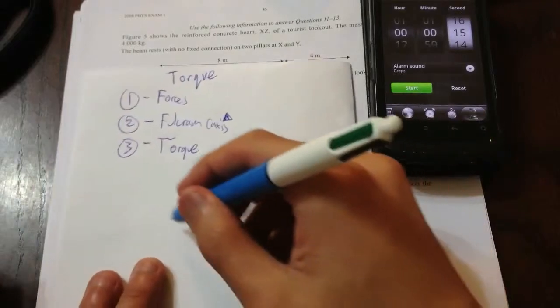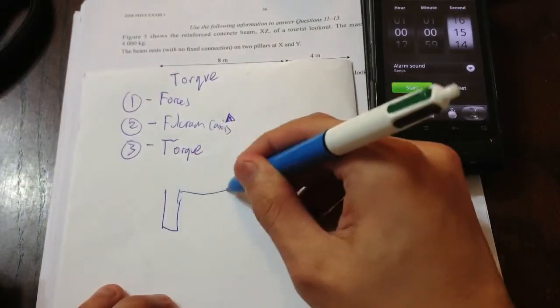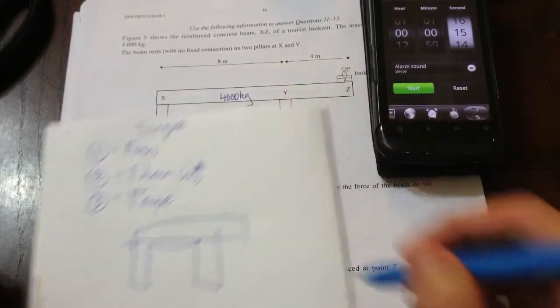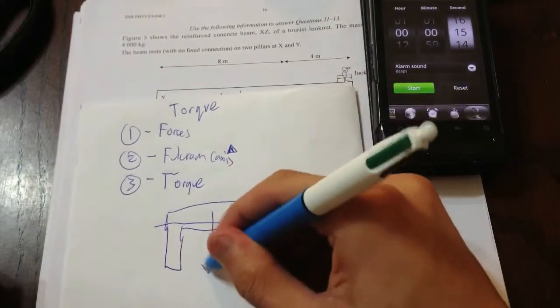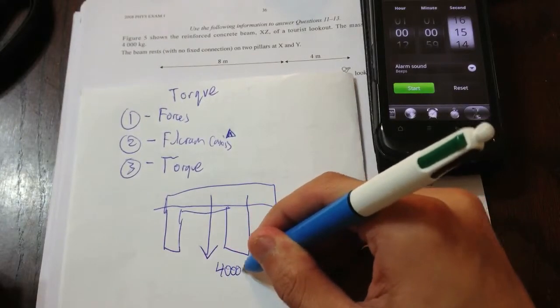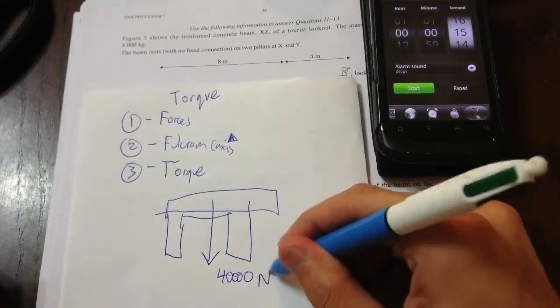So, I'll show you now where the forces should be. Ah, that's a pretty bad diagram. Essentially, there's one force going down here. And that's 4,000 kg times gravity makes 40,000. Okay, 40,000 N going down here.